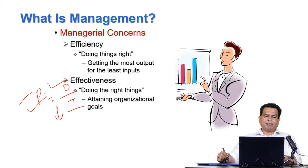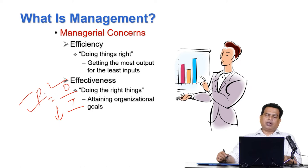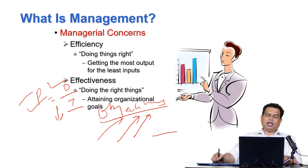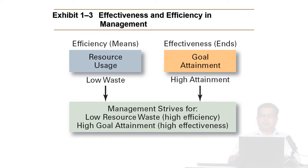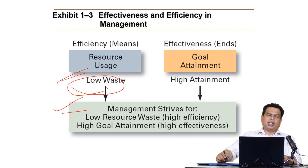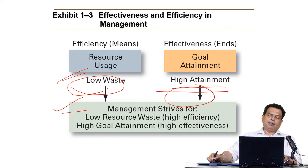Effectiveness means doing the right things — that is, attaining organizational goals. Doing the right things is concerned about achieving the organizational objectives, and we have to work only in a manner directed towards the achievement of those objectives. We should not do activities that are not concerned with the objective, so objective-focused management becomes very important. Efficiency deals with resource usage — waste has to be low — so that we can have maximum output. Effectiveness deals with goal attainment — the attainment of goals should be high — meaning we should try to achieve goals as soon as possible with the least number of resources utilized.